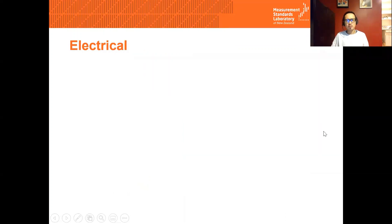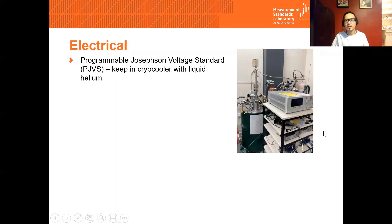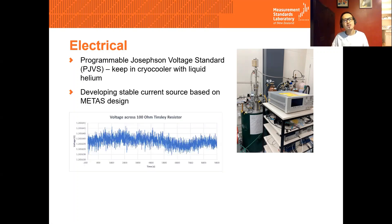For voltage measurement, electrical standards have a PJVS with at least two parts per 10⁸ accuracy, and it has to be stored in a coil state maintained at about 4 Kelvin. Chris Young is currently developing a very stable current source based on Mita's design. Preliminary results show 4 parts per million drift over 3 hours, which looks quite promising towards a demanding goal.